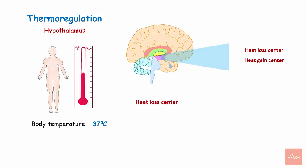The heat loss center is located in the anterior hypothalamus. In case of increased body temperature, the heat loss center is activated and promotes heat loss by cutaneous vasodilation and sweating, thereby cooling the body.